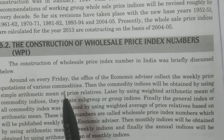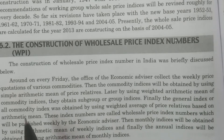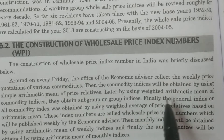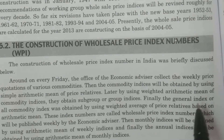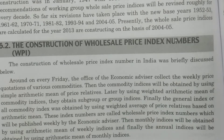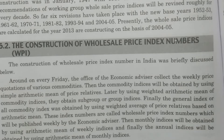The methodology of constructing the Wholesale Price Index: around every Friday, the Office of Economic Advisor collects weekly price quotations of various commodities. The commodity indices are obtained by using the simple arithmetic mean of price relatives. Then, the weighted arithmetic mean of commodity indices is calculated to obtain subgroup and group indices. Finally, the general index is obtained by using the weighted average of price relatives based on the arithmetic mean. These index numbers are published weekly by the Economic Advisor.